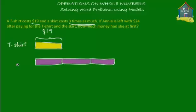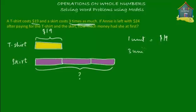Let me write that down here: Skirt. If the t-shirt is $19, how much is the skirt? If one unit equals $19, then three units will equal three times $19. That's 3 × $19 = $57. So the skirt costs $57.